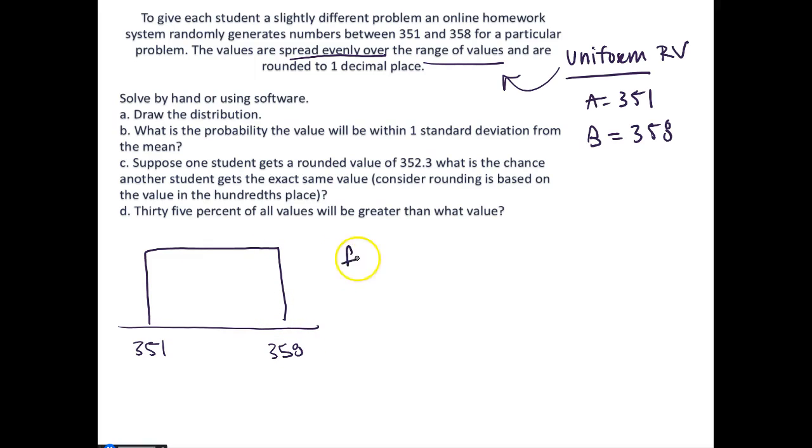The uniform probability density function is 1 over b minus a, which equals 1 over 358 minus 351, which in this case is 1 over 7. That's going to be the height of our probability density distribution function, the height of our box here.